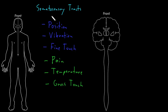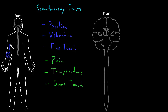Somatosensory information from most of the body is going to travel back to the central nervous system through nerves in the peripheral nervous system, and then spinal nerves that will enter the spinal cord. For example, a receptor carrying position sense information in the arm will travel in peripheral nerves and then spinal nerves to deliver that information into the spinal cord.